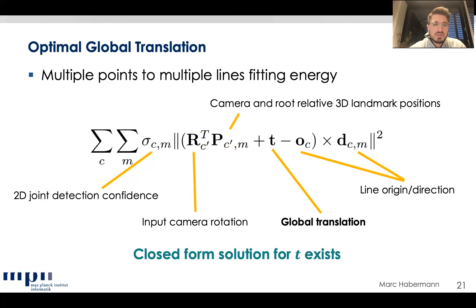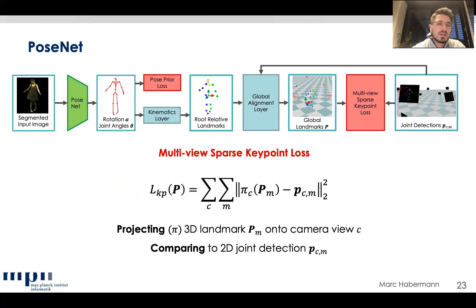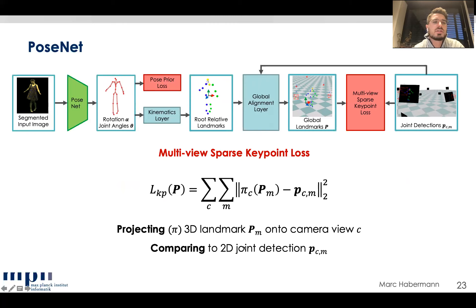Once we have the global rotation and translation, we bring the markers into global space and evaluate the multi-view sparse keypoint loss: we project the global 3D landmarks into all views and compare the distance to OpenPose joint predictions. This is how PoseNet is trained.